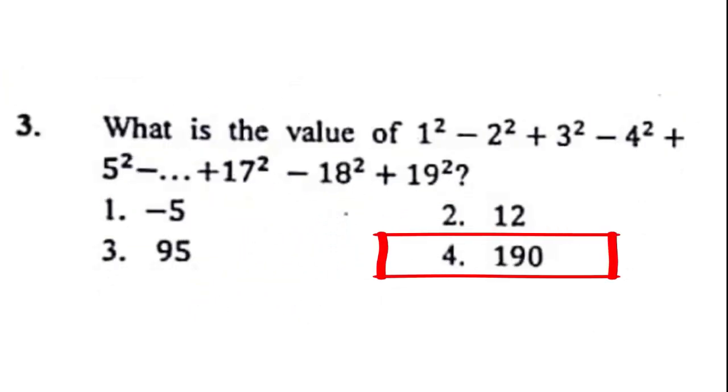Problem number 3: What is the value of 1 squared minus 2 squared plus 3 squared minus 4 squared plus 5 squared minus... and so on, plus 17 squared minus 18 squared plus 19 squared? There are given 4 options. The correct answer to this problem is option 4, that is 190.